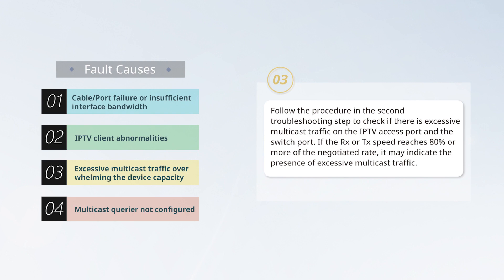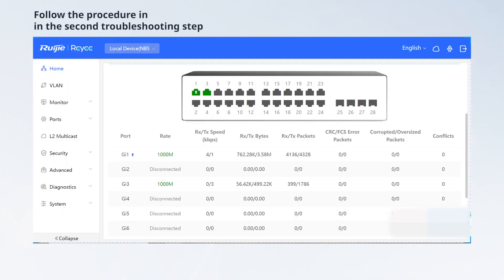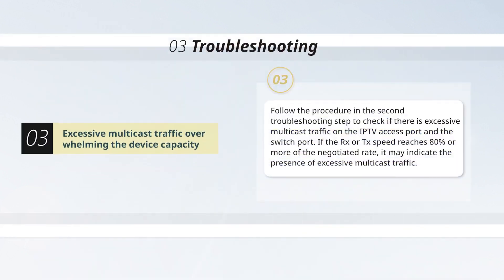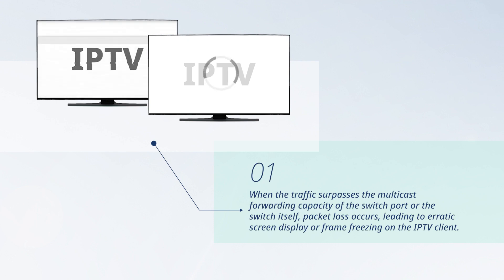Follow the procedure in the second troubleshooting step to check if there is excessive multicast traffic on the IPTV access port and the switch port. If the RX or TX speed reaches 80% or more of the negotiated rate, it may indicate the presence of excessive multicast traffic. Excessive multicast traffic can cause the following issues: when the traffic surpasses the multicast forwarding capacity of the switch port or the switch itself, packet loss occurs, leading to erratic screen display or frame freezing on the IPTV client.